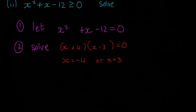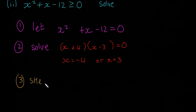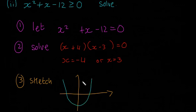So now we need to sketch it. Step 3, it's just a sketch. It's going to be a plus x squared so that means it's going to be a U and it's going to hit the x axis at minus 4 and 3. So I'll do this in blue. So minus 4 and 3. It's just a rough sketch, doesn't have to be that accurate at all. It's more just to get your general shape.